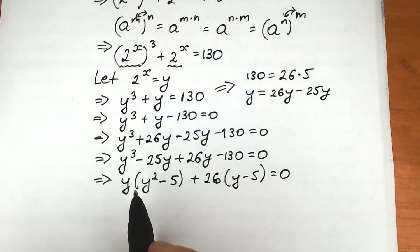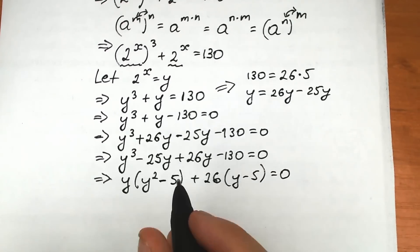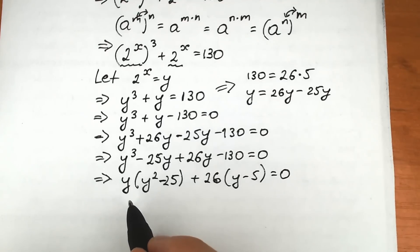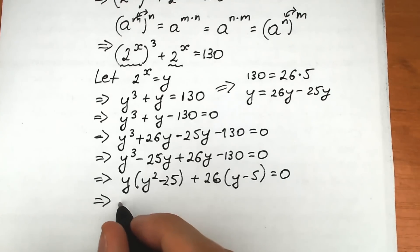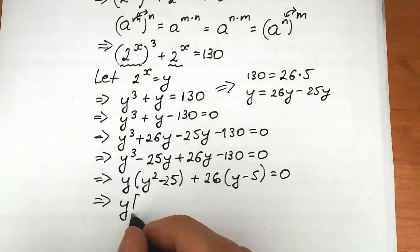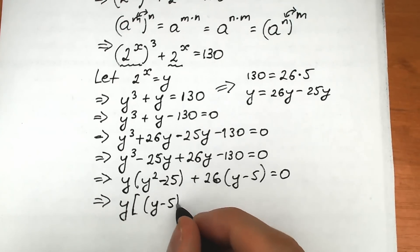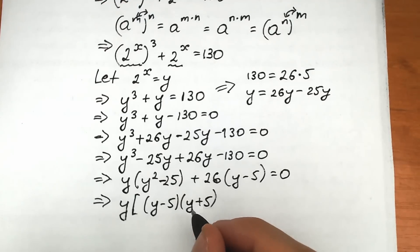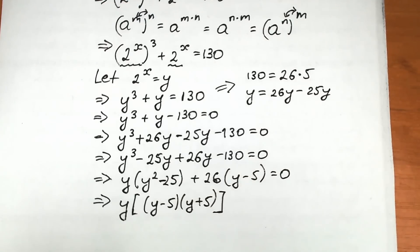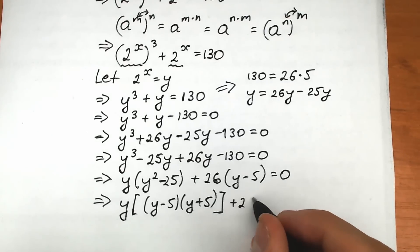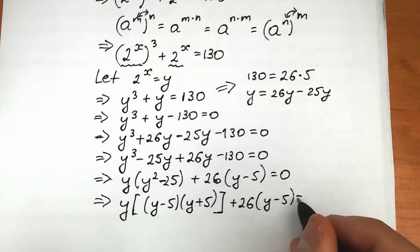This is the well-known difference-of-squares formula: y squared minus 25 equals y squared minus 5 squared. As a result, we can write it as (y minus 5)(y plus 5). So we have y times (y minus 5)(y plus 5), and plus 26 times (y minus 5), which is equal to zero. We can see the same (y minus 5) in both expressions.